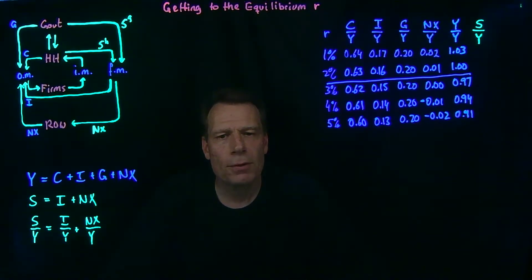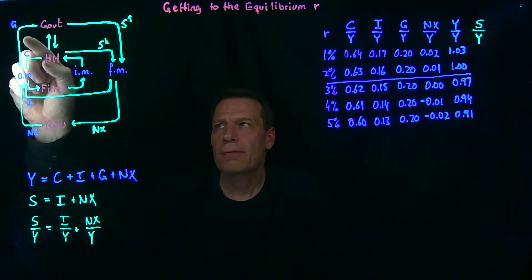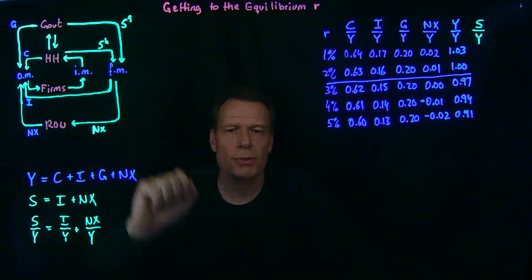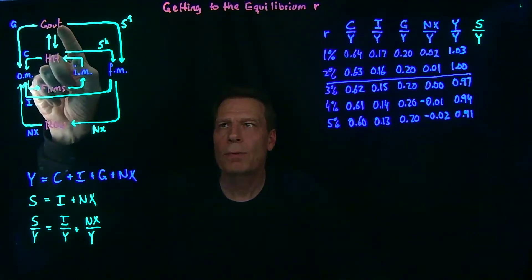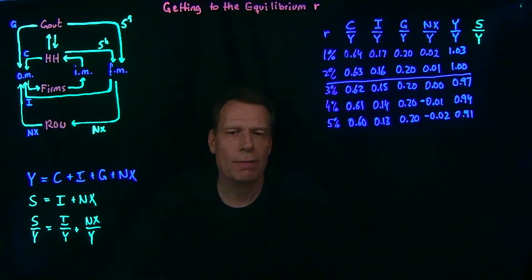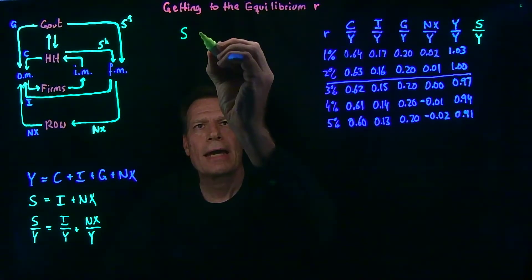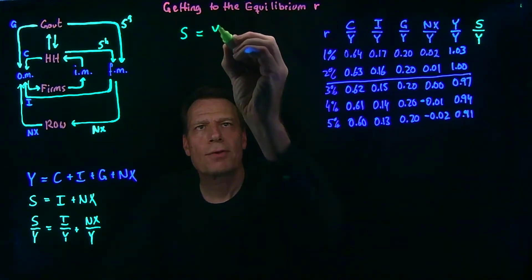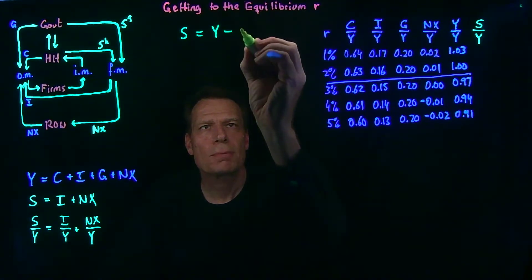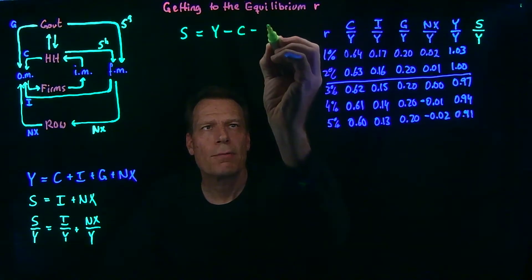Well, for that we have to look to the top of the circular flow diagram and recognize that GDP can only flow in one of two directions, either to the left where we see government purchases and consumption, or to the right where we see government savings and household savings. In other words, domestic savings has to be equal to what's left over from GDP once we subtract out consumption and government purchases.